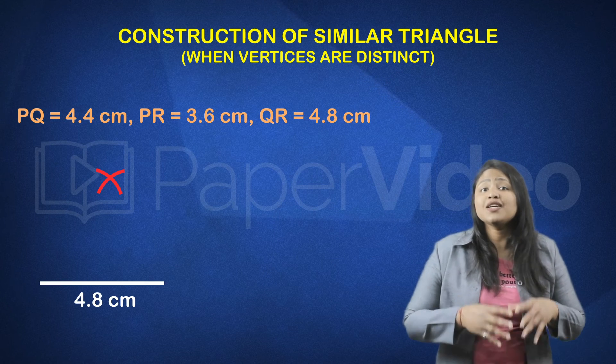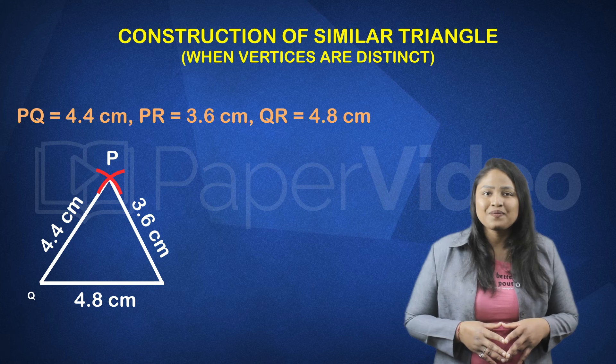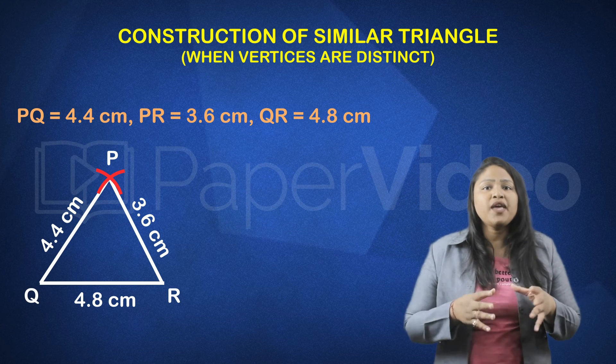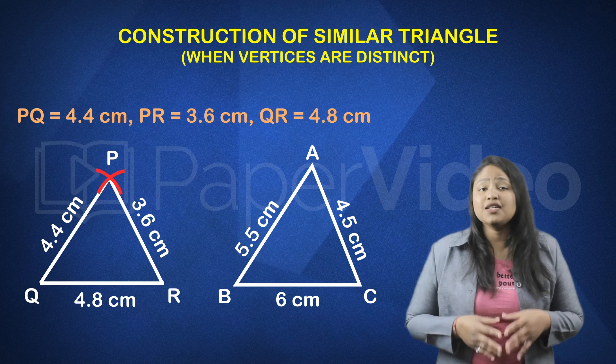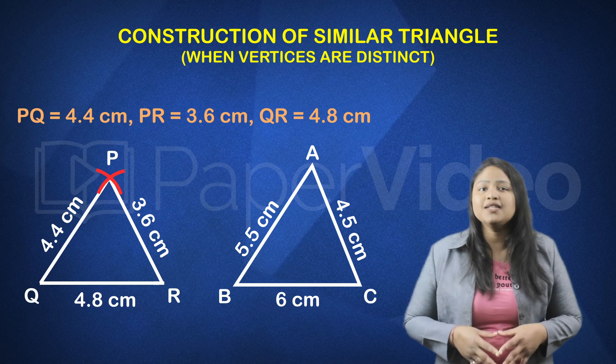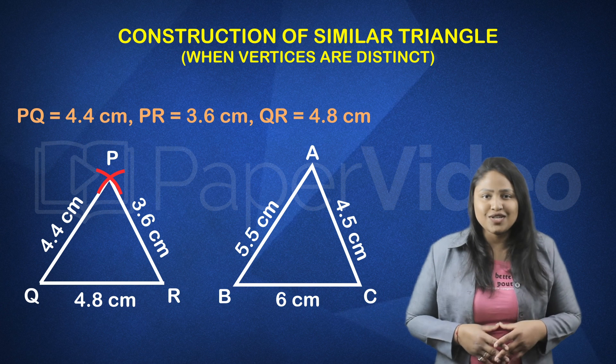Now that we know the dimensions of the triangle PQR so we can easily construct it using a ruler and a compass. The resulting triangle PQR will be similar to the given triangle ABC. So this is how we construct a triangle similar to the given triangle when all the vertices are distinct.